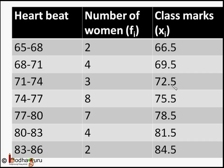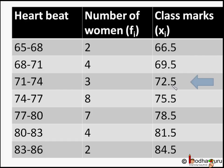Class marks are large values, so the direct method would be very time consuming. Computing fi × xi would produce big values and then we would need to sum them all, so we need to reduce these values.